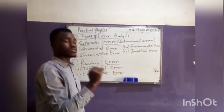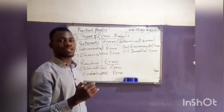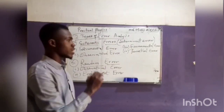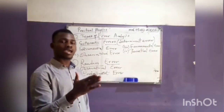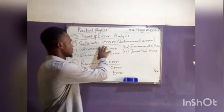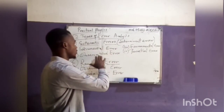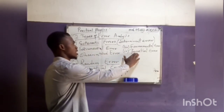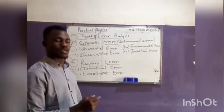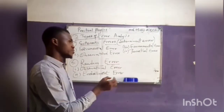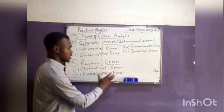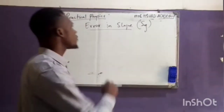For systematic errors, the values are consistently too high or consistently too low. For random errors, about half of the values are consistently too high and the other half are consistently too low. The forms of random error include the observational error and the environmental error — these are the possible ones we might observe.